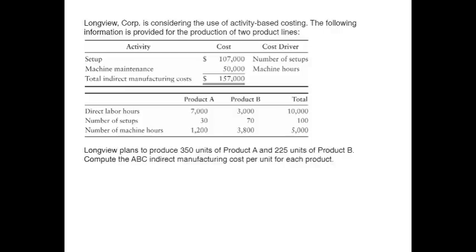We have product A and product B. We have the two activities that these products go through: setup and machine maintenance, and the estimated cost for each activity and the cost driver for each of those activities. And then we're given direct labor hours, number of setups, and number of machine hours for each product, as well as the total cost, total hours, total number of setups, and total number of machine hours.